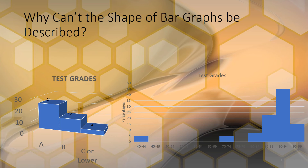The reason we can't describe the shape of a bar graph is because we could have put the categories in different orders. The bar graph looks skewed to the right, but the histogram of the same data looks skewed to the left — and the histogram is the accurate representation. Changing the category order or the widths makes the bar graph look different, so we must only describe the shape of histograms, which follow specific rules and allow us to communicate meaningfully about shape.